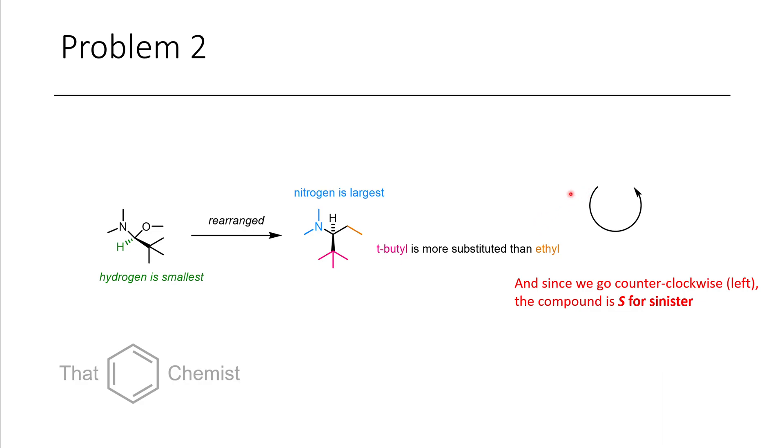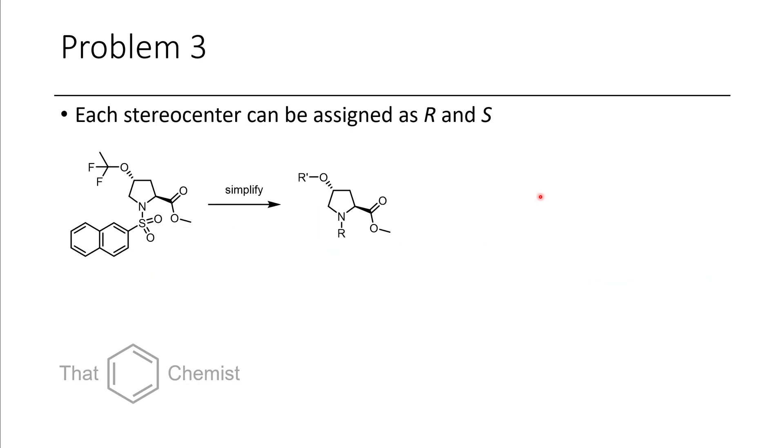Let's look at a more complicated example. For something like this, you might be overwhelmed and think, how am I ever going to solve this? But that's not wise. First, we're going to simplify it. We're going to replace this big, bulky group with an R group, and replace that small but still confusing group with an R' group. Now we're going to number this pyrrolidine ring. We start with the nitrogen, 1, 2, 3, 4, 5. We go this way because this is where the first substituent is.